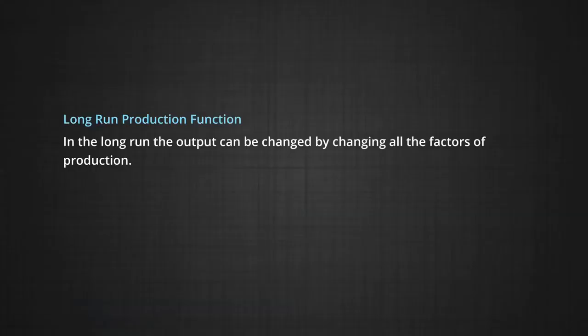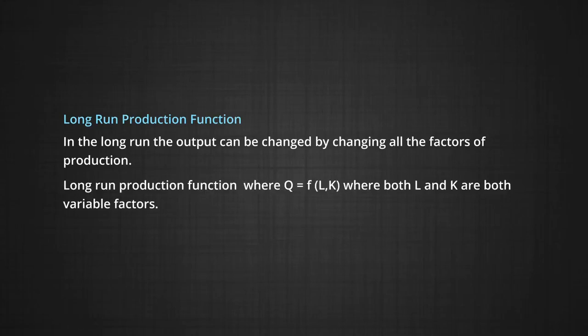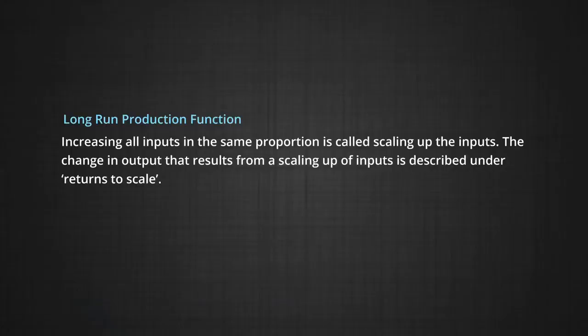We now turn to the long run production function. In the long run, output can be changed by changing all the factors of production. A long run production function is also described as Q equals F of L and K. In this case, both L and K are variable factors. As all the factor inputs are variable in the long run, the ratio between various inputs can remain the same at different levels of output. Increasing all inputs in the same proportion is called scaling up the inputs. The change in output that results from a scaling up of inputs is described under returns to scale.